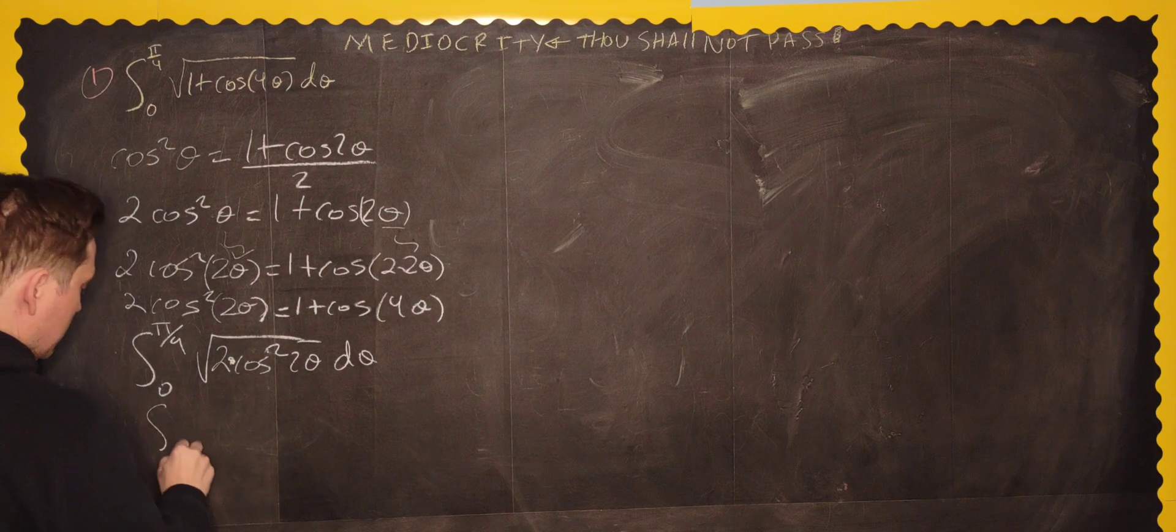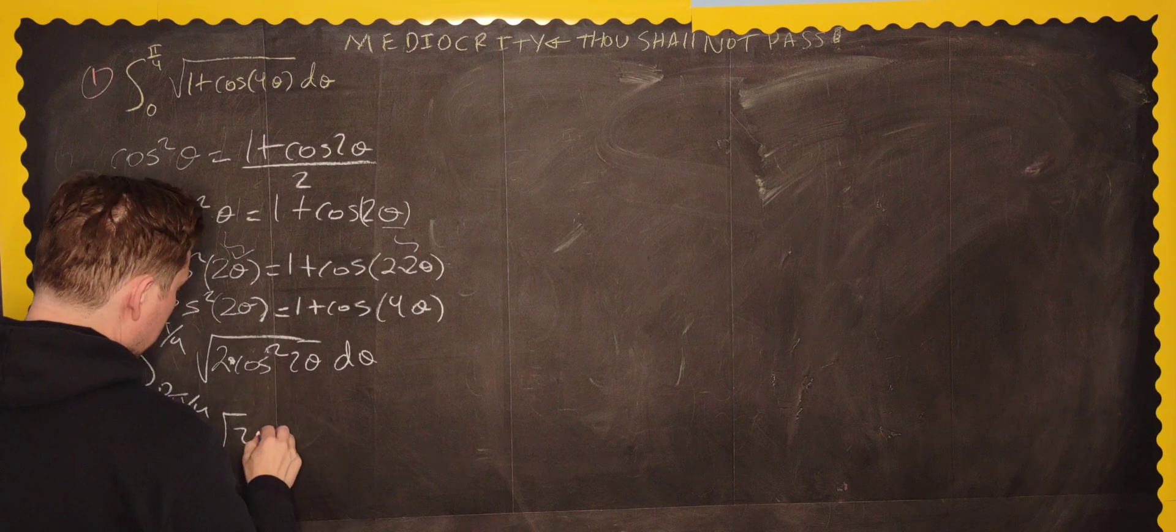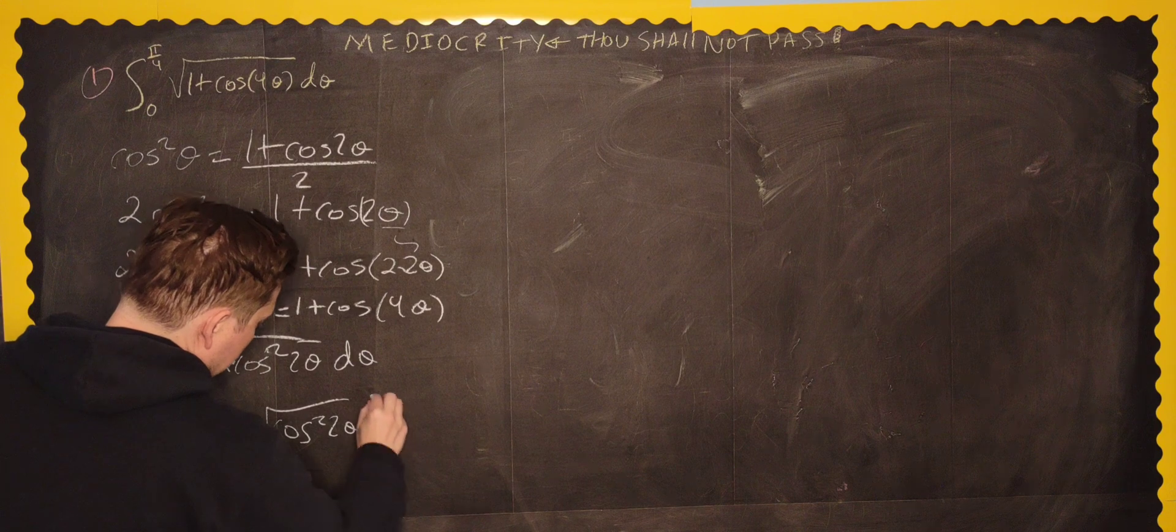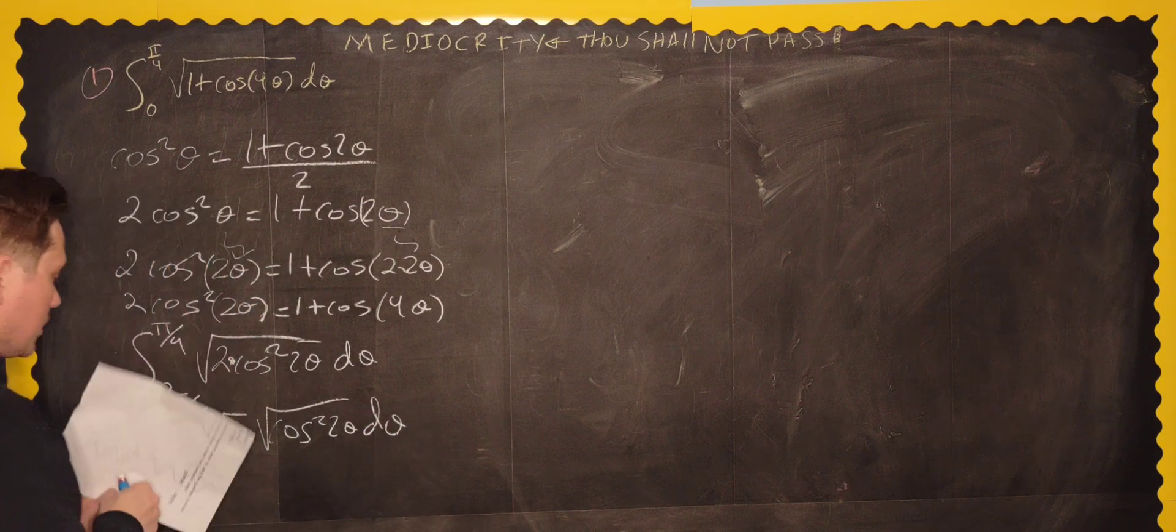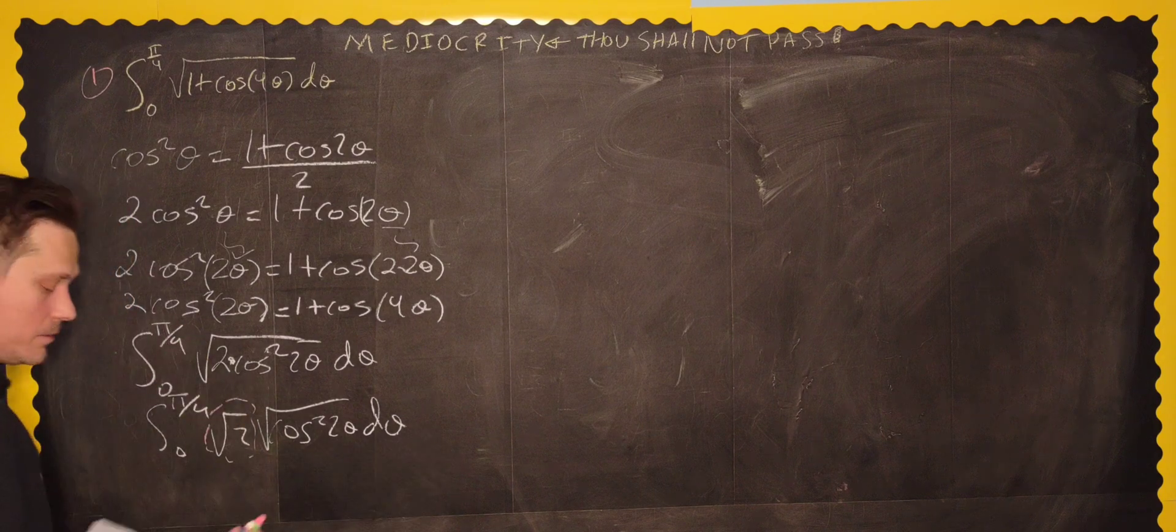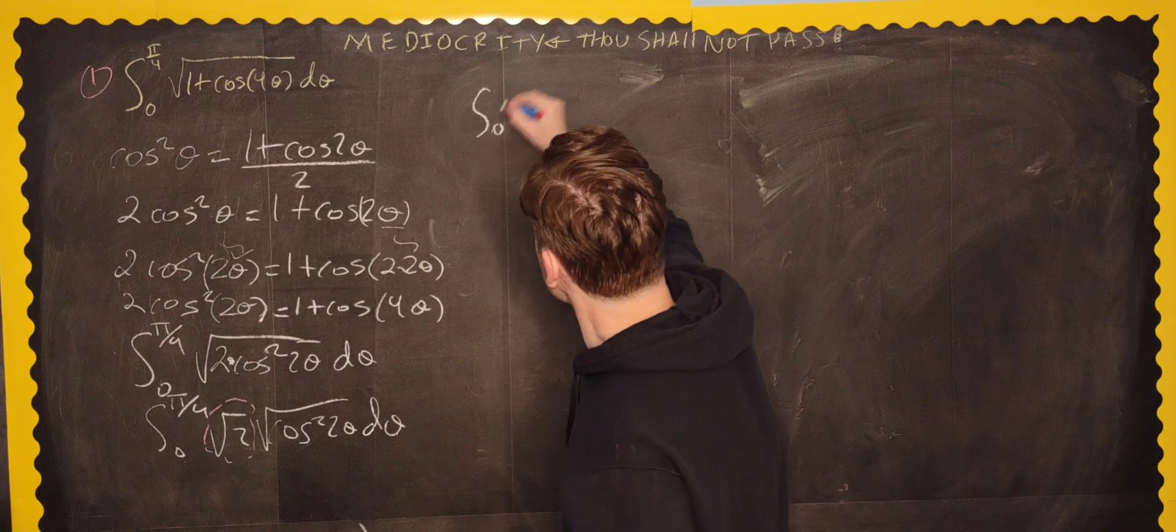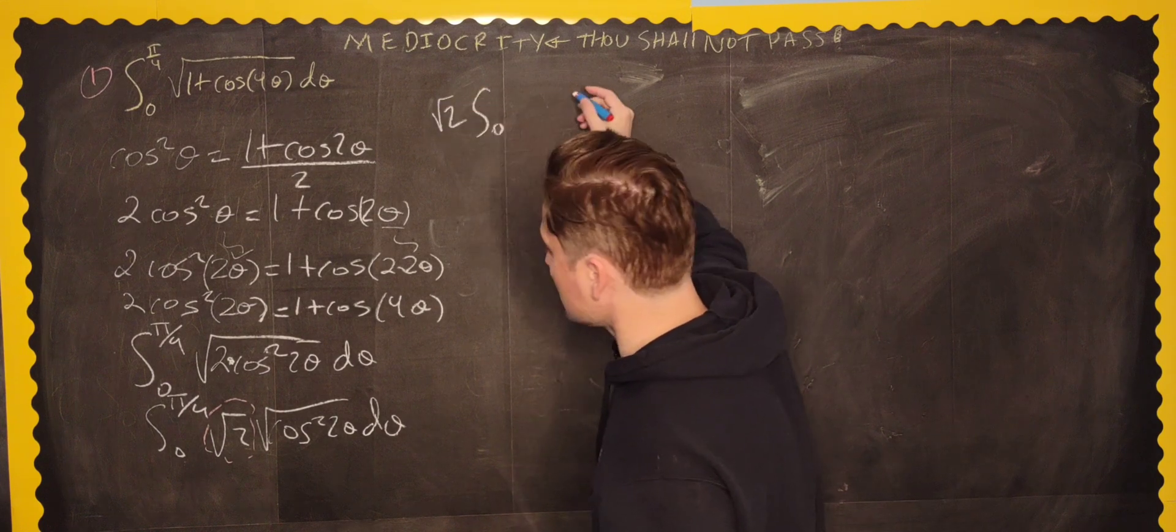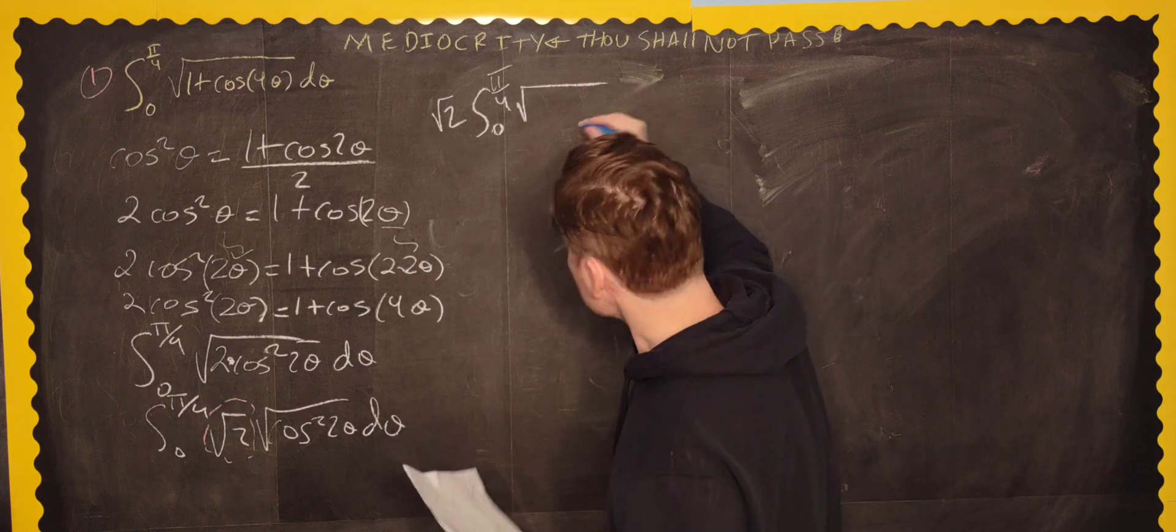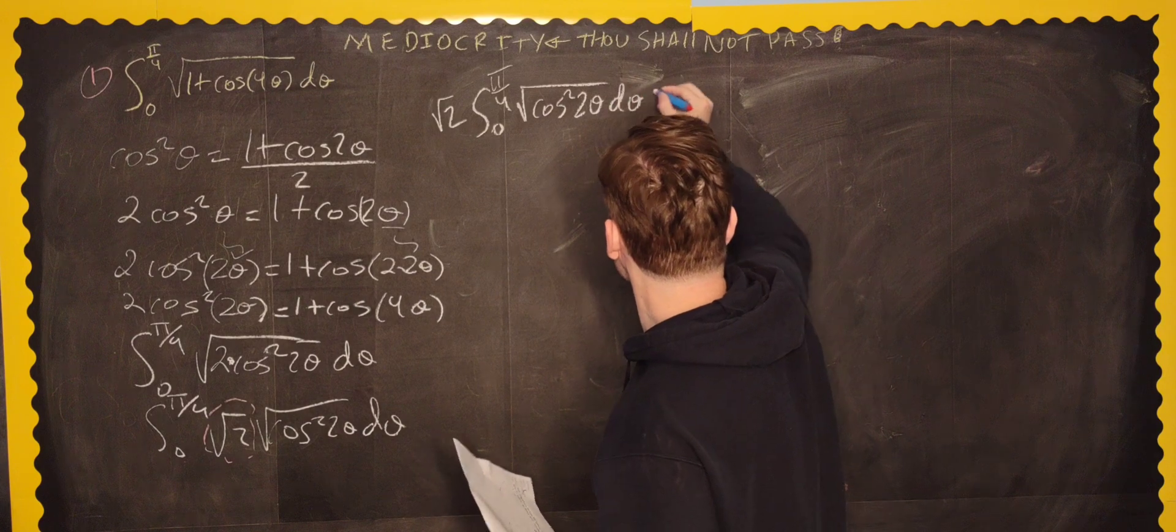Now, we can distribute the root operation to each quantity. So it's going to be the integral from 0 to pi over 4 of the root of 2. And then cosine squared of 2 theta d theta this way. And, of course, this part right here, this is a constant at the root of 2. So that can go outside the integral symbol. So let's do that next right here. So the integral from 0 with the root 2 on the outside and then pi over 4.